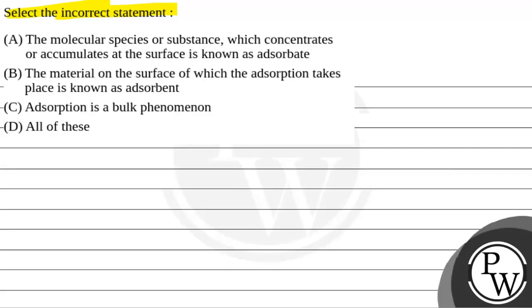Option A says the molecular species or substance which concentrates or accumulates at the surface is known as adsorbate. Option B: the material on the surface of which the adsorption takes place is known as adsorbent.